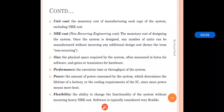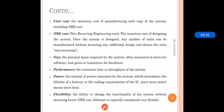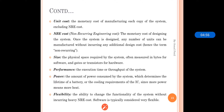Performance is the execution time or throughput of the system. It is expected that our system should run in a minimum amount of time with good throughput. Power is the amount of power consumed by the system, which determines the lifetime of a battery or the cooling requirements of the IC, since more power means more heat. It is desirable to have less power consumption.